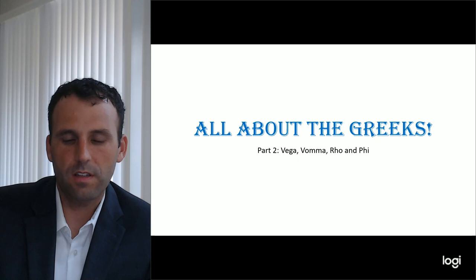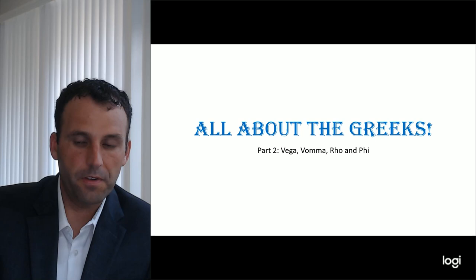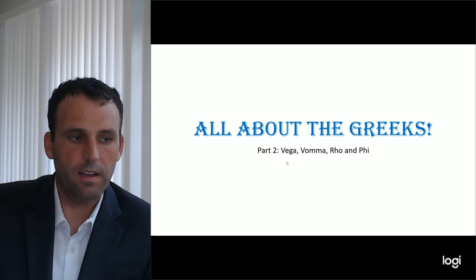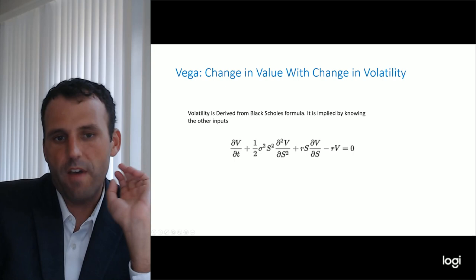In this part two we're going to go into volatility and a few of the more obscure Greeks, including a more custom one that I use for my own research process. The first one we're going to talk about is vega, which is the change in value with the change in volatility.